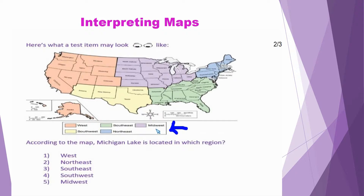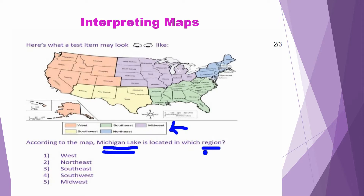So now that we have applied our map key to our map so that we can understand what our map is telling us, we now want to reread our question, which states: according to the map, Michigan Lake is located in which region? So after we have reread our question, we want to take note of our key terms. In this case, Michigan Lake is what we're looking for, and we're also looking for the region. So now we want to go back to our map and find Michigan Lake on our map.